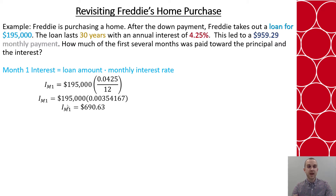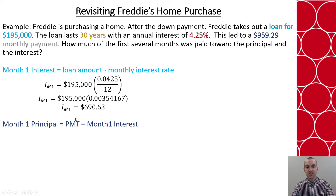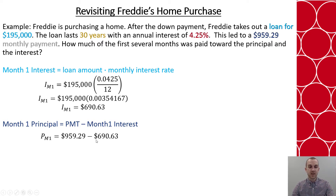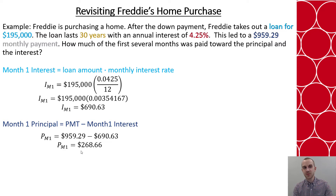The remaining amount of that monthly payment has to be towards the principal. So I take my monthly payment, subtract out my interest, and that tells me how much goes towards the principal of the loan. So subtracting those two numbers, only $268.66 goes towards the principal that month.